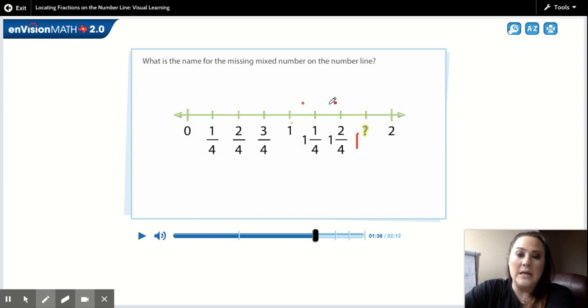So I've got one, two, three, four. So I know that my denominator is still four. And now I need to count where the fraction stops. I start at one this time and I go one, two, three. So the missing mixed number on this number line is one and three-fourths.